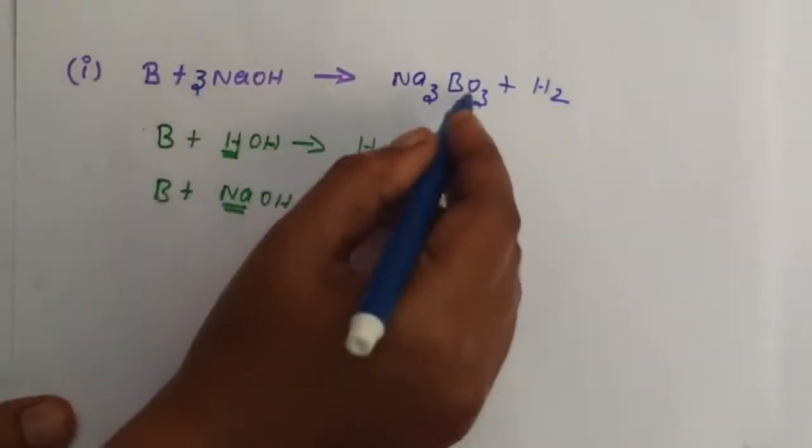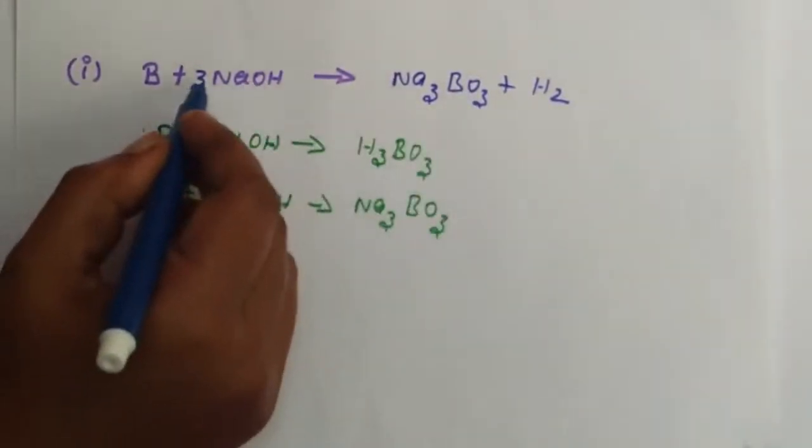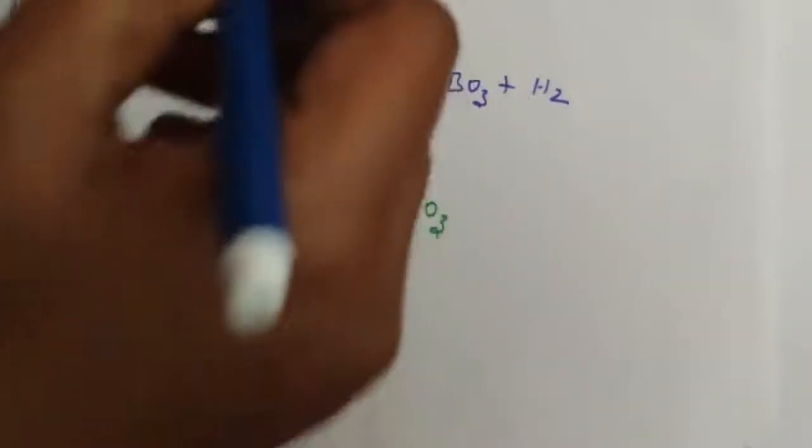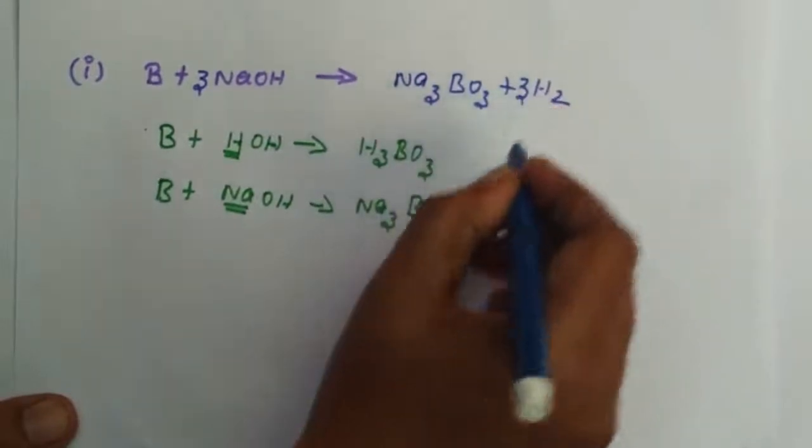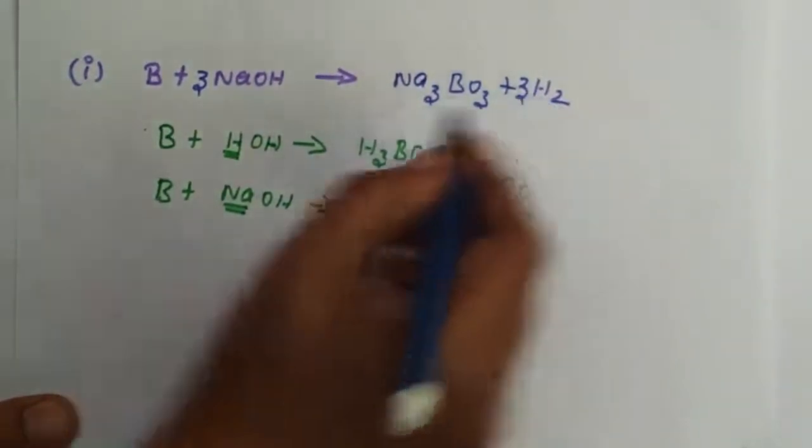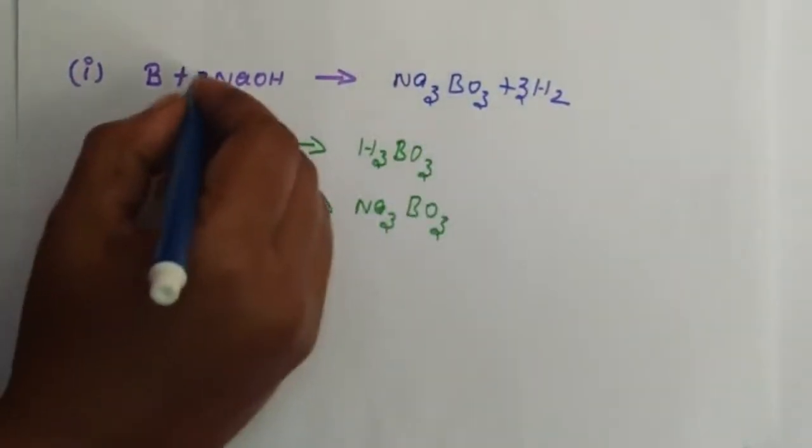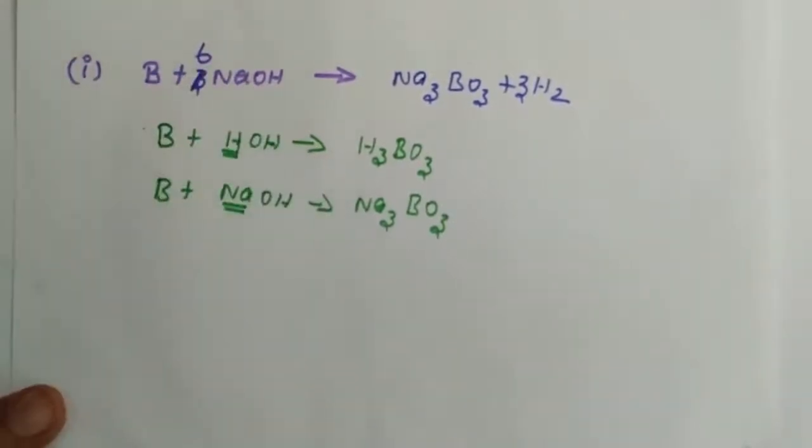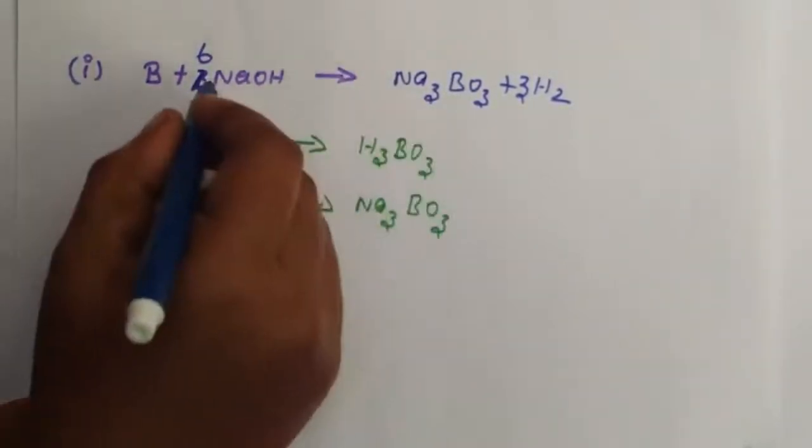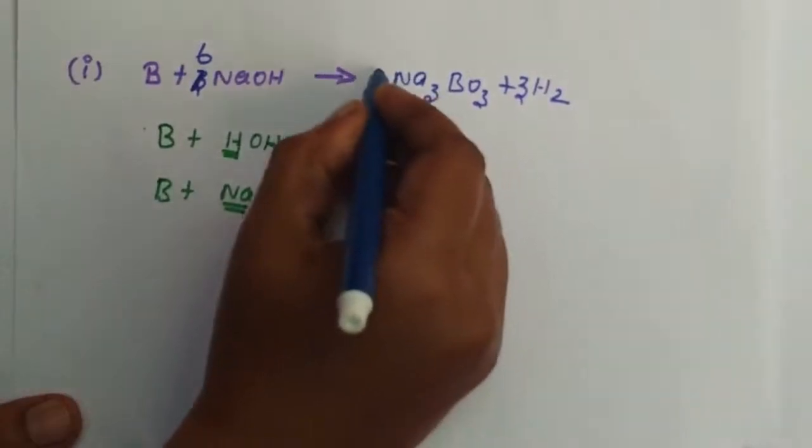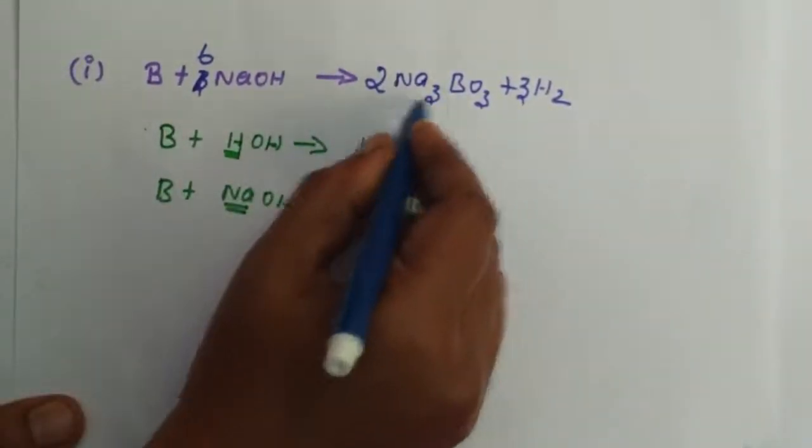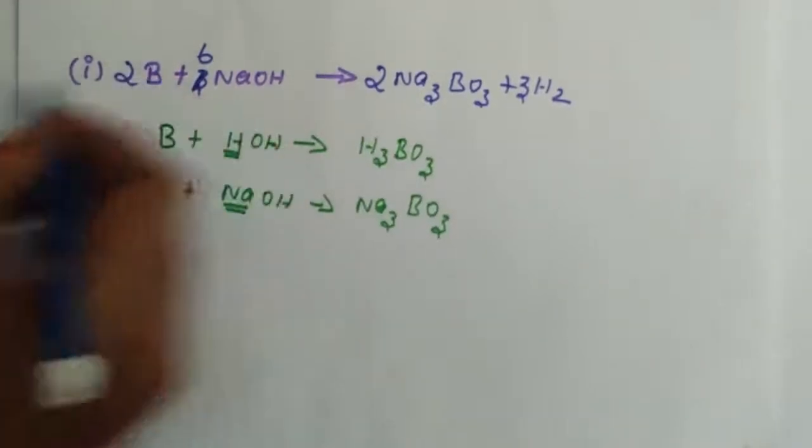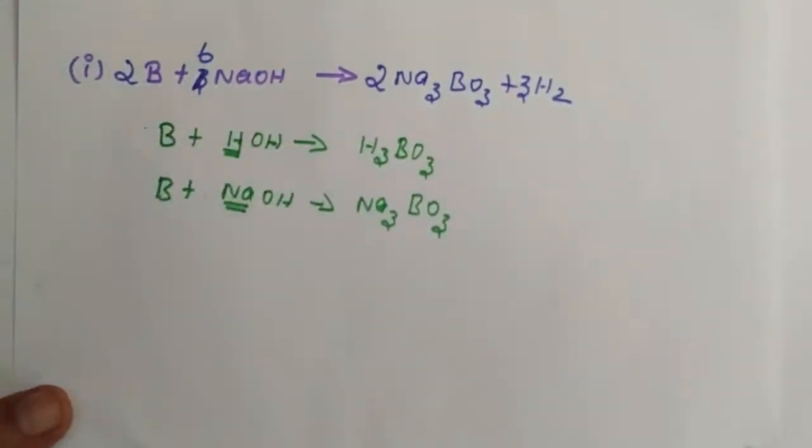Hydrogen is three on one side and two on the other. If we multiply by three, we get six. So six hydrogen total. Sodium becomes six, so we need two times three equals six for sodium. Now boron is two, so we balance with two boron. The equation is now balanced.